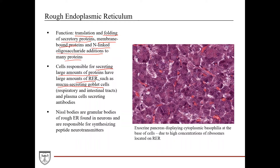Examples of cells rich in rough ER include mucus-secreting goblet cells, which are found in the respiratory and intestinal tracts, and plasma cells, which are responsible for secreting antibodies. Antibodies are a type of protein, so it makes sense that plasma cells would have a lot of rough endoplasmic reticulum. These are common histology test questions and can show up on board exams like the USMLE, because they require you to tie together the overall function of the cell with the function and relative concentration of organelles within the cell. Nissl bodies are granular bodies of rough ER found specifically in neurons, and they are responsible for synthesizing peptide neurotransmitters.